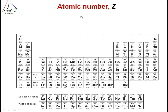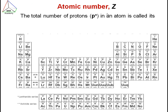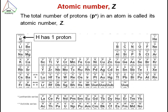So let's take a look at atomic number, which is represented by Z. The total number of protons in an atom is called its atomic number. In the periodic table, you will see there are two numbers written – one just above the element and another larger number just below the element. The number written just above the element represents the atomic number, which is the number of protons of that atom.